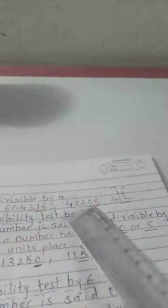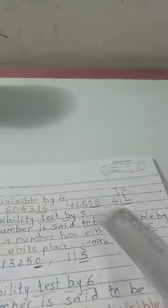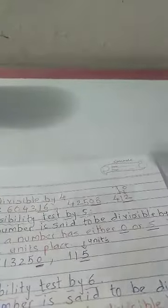Next number is forty-two thousand five hundred and eight. Ismein bhi humein last two digits dekhne hain — unit place pe eight hai, aur tens place pe zero hai. Toh total number ho gaya eight. Toh eight jo number hai, woh four ke table mein aata hai kya? Four twos are eight — yes, so it is a multiple of four. Toh yeh total number — forty-two thousand five hundred and eight — is divisible by four. Next number is five hundred and twelve. Five hundred and twelve mein last two digits kaunse hain? Twelve. Toh twelve — four ke table mein aata hai kya? Yes, four threes are twelve. That is why five hundred and twelve is divisible by four. Toh aise aapko check karna hai last two digits.